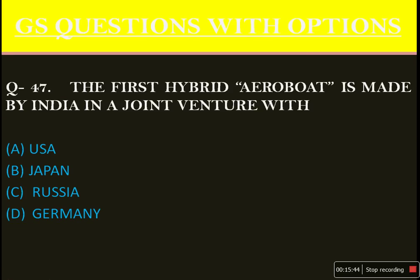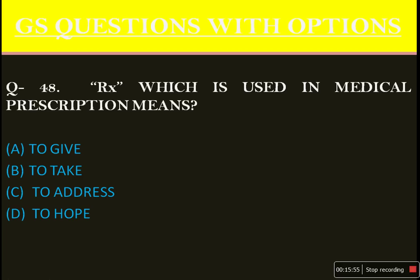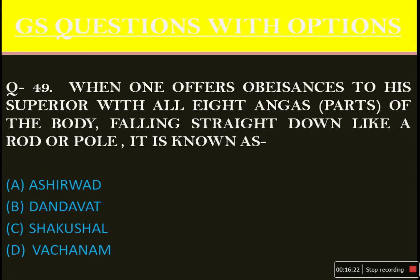The first hybrid aero-boat is made by India in a joint venture with which country? The answer is option C. 'Rx' which is used in a medical prescription means — I liked this question, it is based on common sense since we have all been to doctors. The answer is option B: 'to take' — meaning the doctor is prescribing, 'you take all these medicines', because the doctor writes Rx followed by the medicines. When one offers obeisances to a superior with all eight angas, parts of the body falling straight down like a rod or pole, it is known as — the answer is option B: Dandavat (Dandavat Pranam).